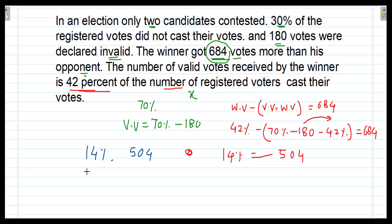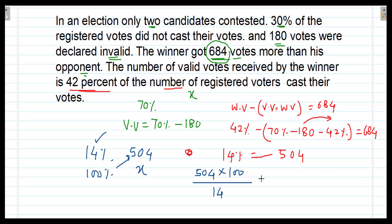So we can say that 14% equals 504. Then 100% will equal how much? Since 14% is 504, we multiply these two and divide by the first one: 504 multiplied by 100 divided by 14, which equals 3600. Therefore, the number of registered voters is 3600.